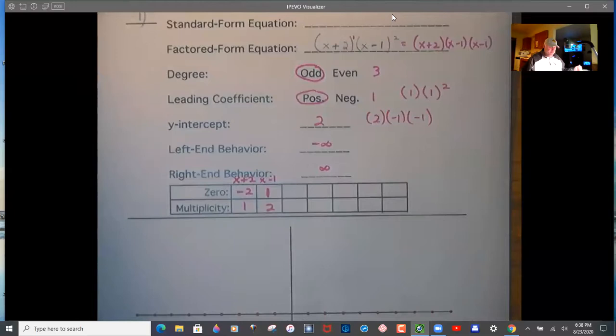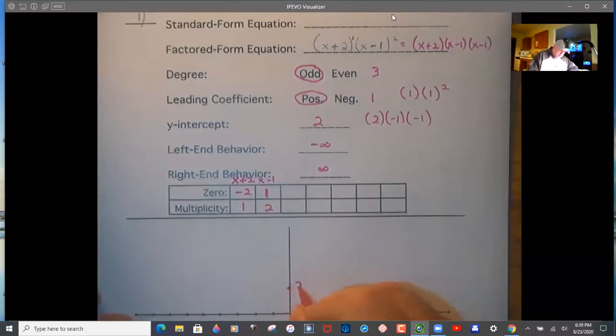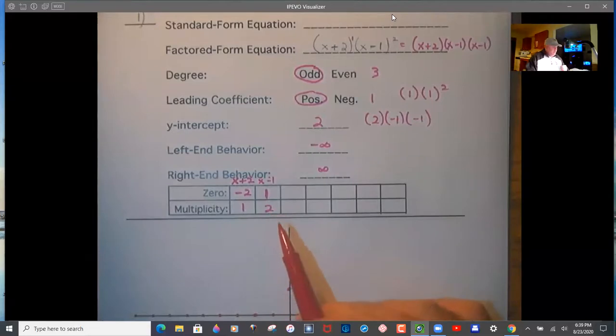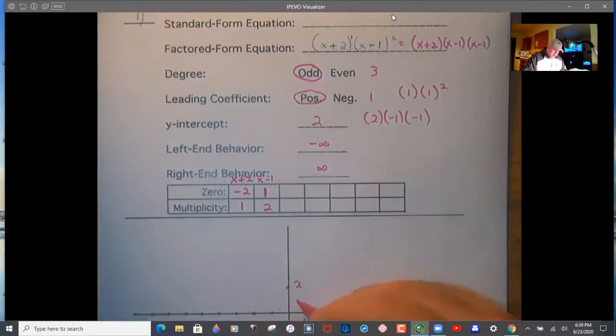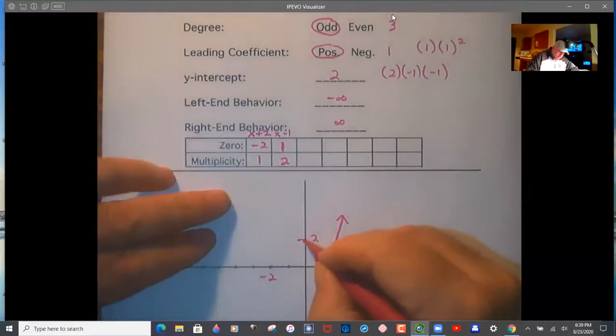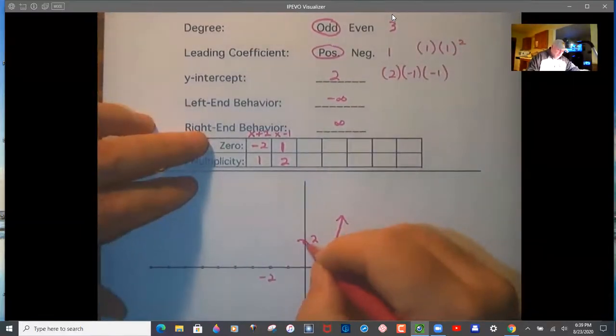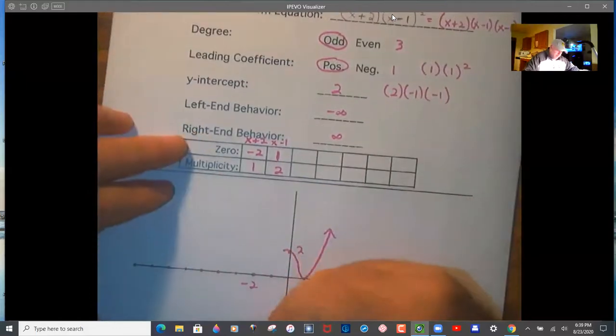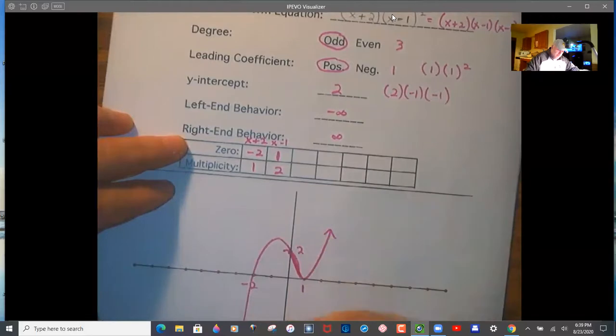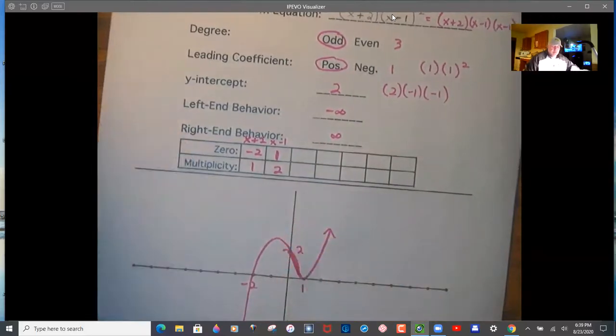Now we're ready to graph. We have a y-intercept of 2, x-intercepts of -2 and 1. Since the multiplicity is 2 at 1, it's going to bounce off. It's going to come down like this and bounce back. I already know that, so I'm just going to do it. Then it's going to come through 2 here. You might want to look at this first before you start sketching so the peak is actually more right there.